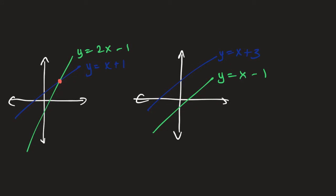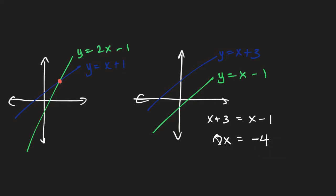We can substitute one equation into the other: x plus 3 equals x minus 1, making the y's equal to each other, and then solve for x. If we do this, we move the x to the other side and get 0x, and if we move that 3 to the other side, we end up with negative 4. So 0x equals negative 4. Is there any value of x that could make that equation true? The answer is no, because whatever we plug in for x is just going to be multiplied by 0. If we try to divide both sides by 0 to get rid of it, that's an illegal operation in math. So the conclusion is that there is no solution — because those lines are parallel.